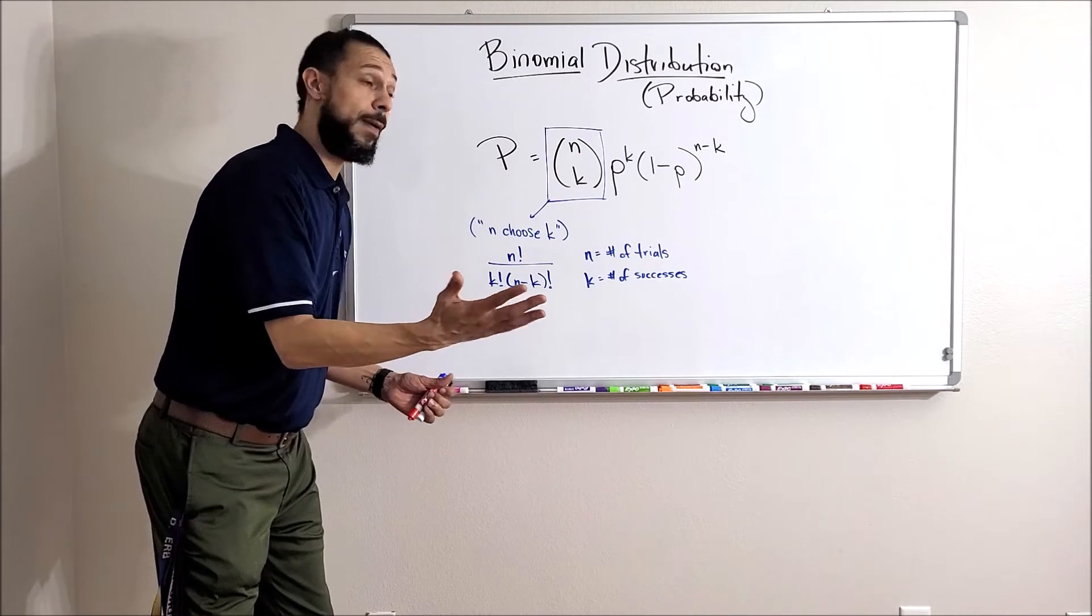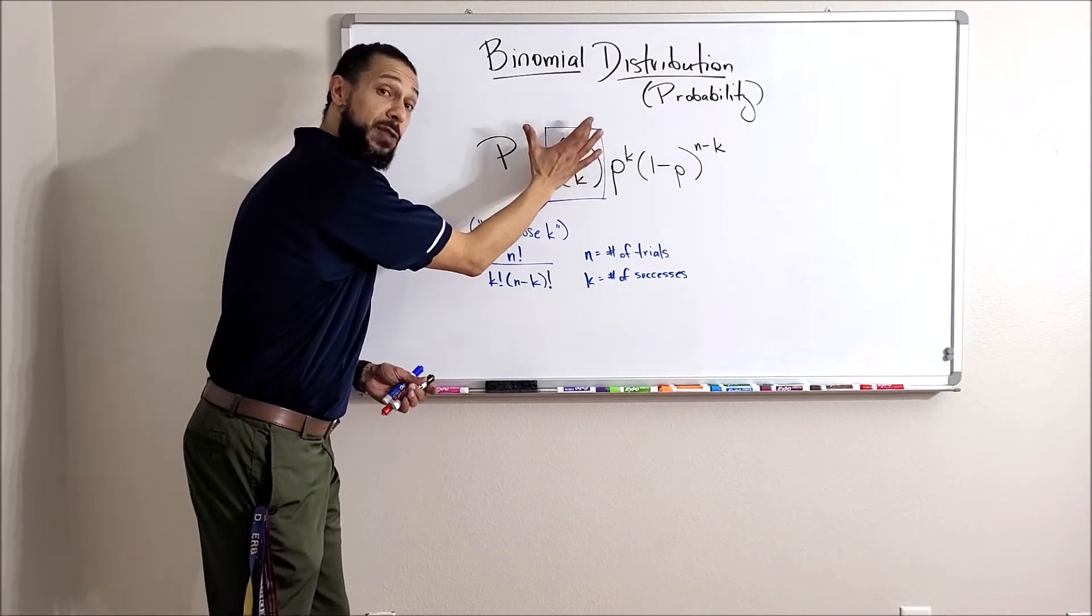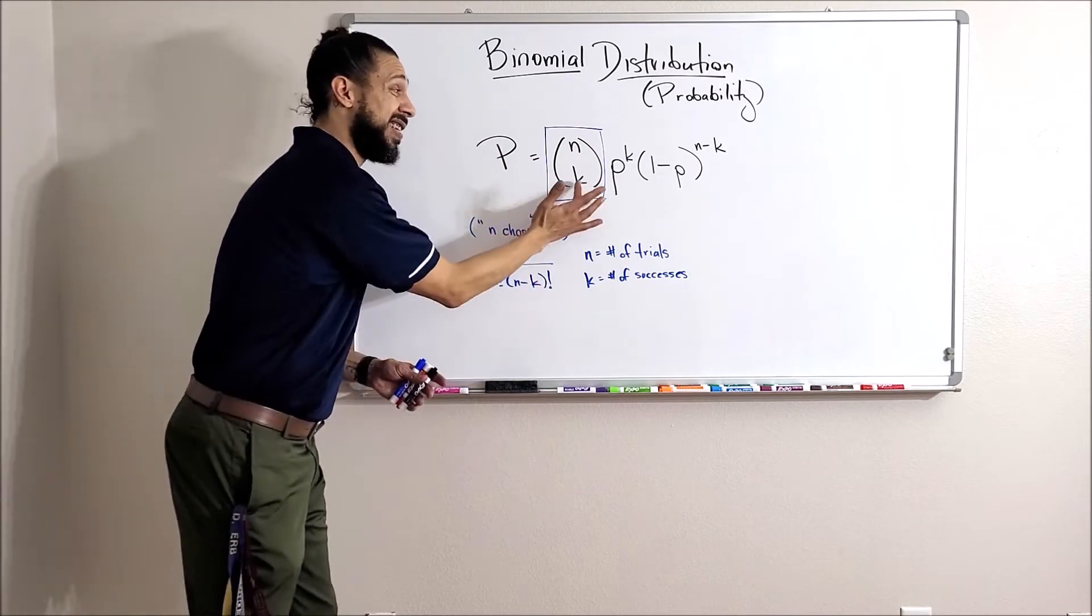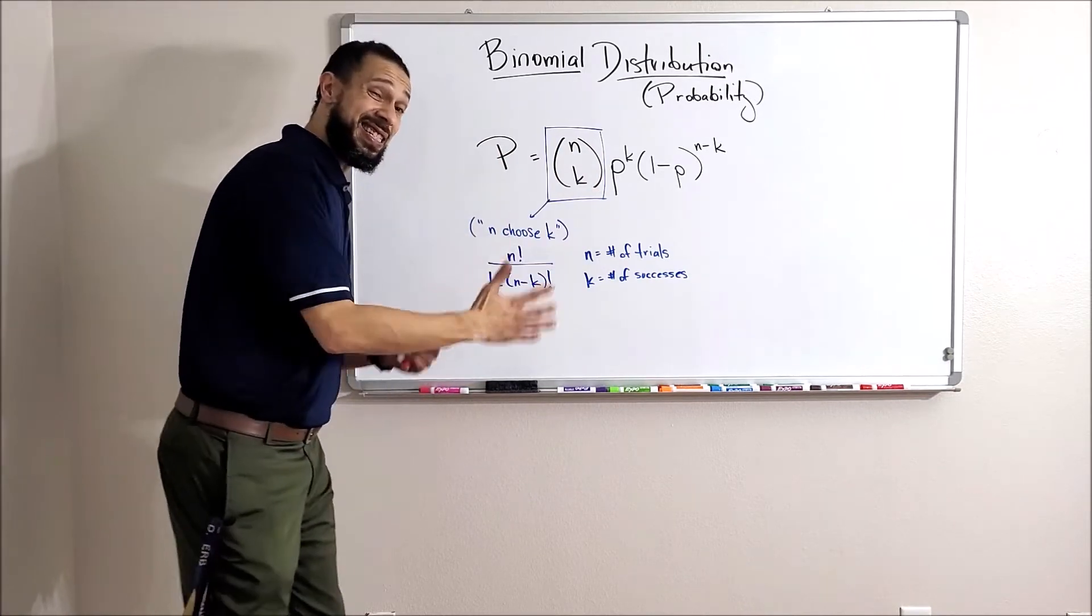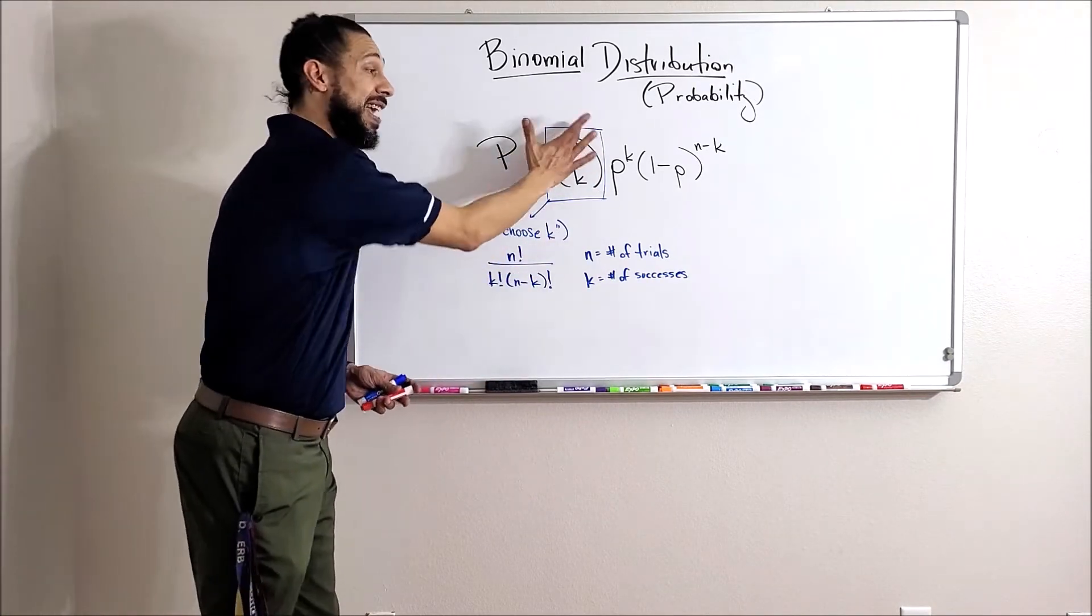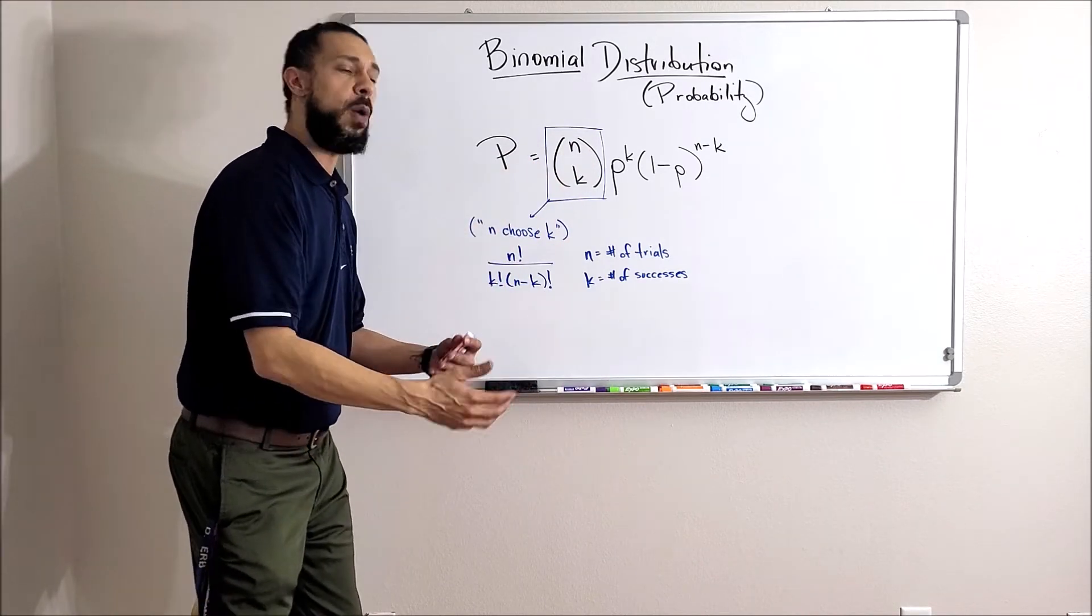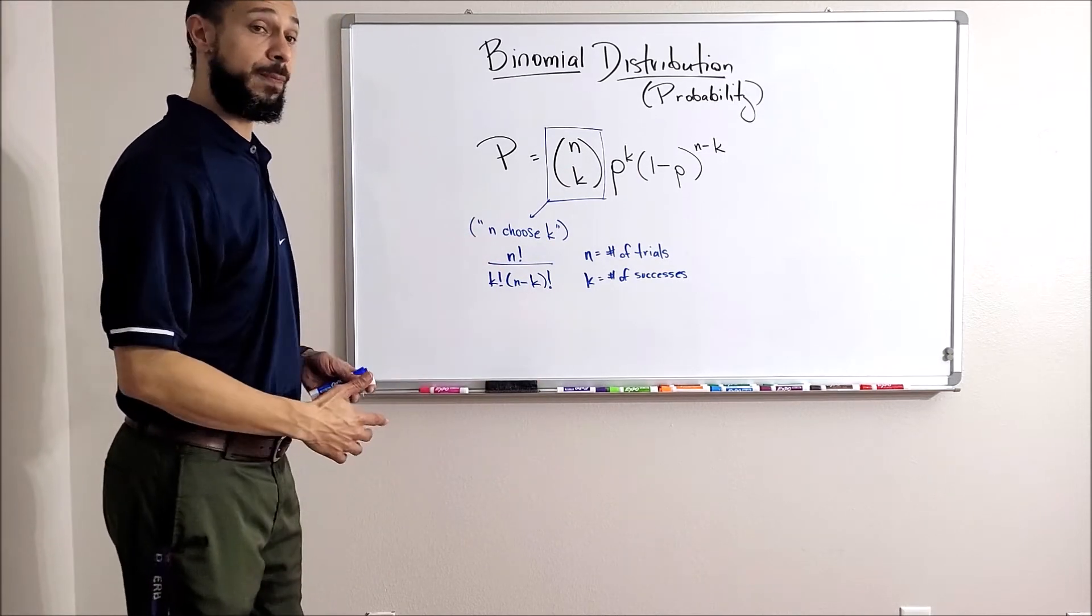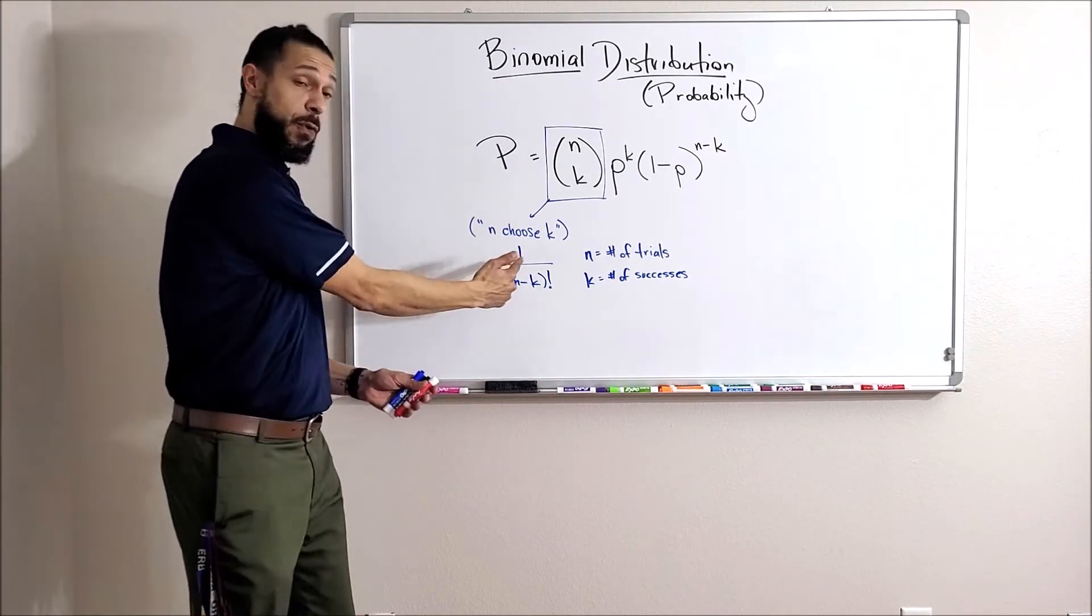What it does is give you the number of possible outcomes in any situation. Let's say I flip a coin 10 times and I want to know, out of those 10 flips, how many combinations are there where six heads come up, with heads being the success. 10 choose 6 would give me the amount of outcomes where there are six heads out of those 10 flips.